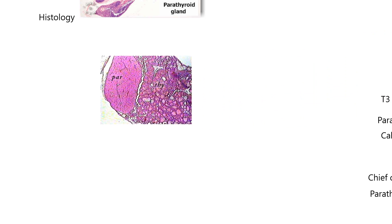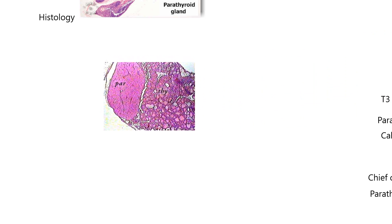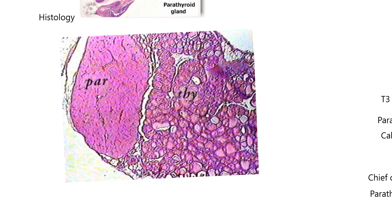Here's another slide - I'll enlarge it. On the left side of this stained tissue is the parathyroid gland - there are no follicles. I'm going to name those cells in a minute. Whereas the thyroid tissue has these follicles filled with colloid. We talked about how T3 and T4 reside in that colloid.